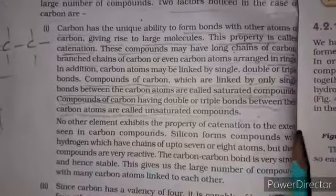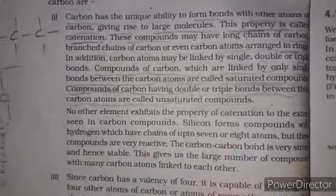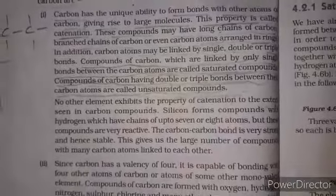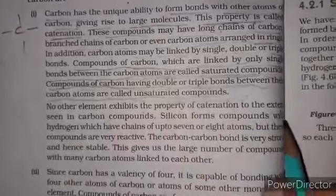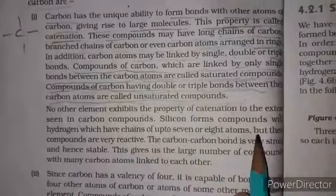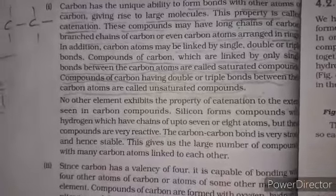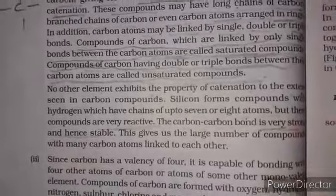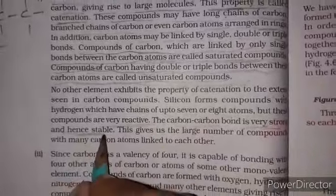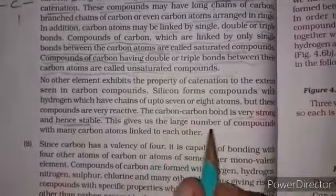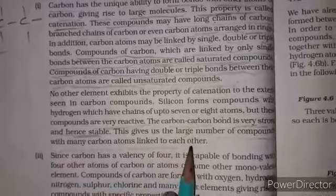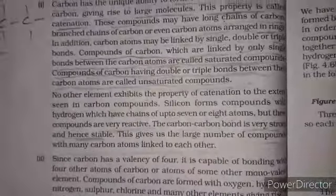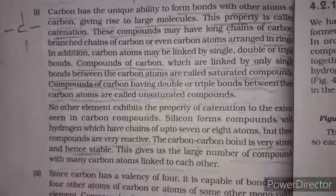No other element shows the property of catenation to the extent seen in carbon compounds. Silicon forms compounds with hydrogen only up to seven or eight atoms, but these compounds are very reactive. The carbon-carbon bond is very strong and hence stable. This gives a large number of stable compounds with many carbon atoms linked together. So due to catenation, carbon forms a large number of compounds.